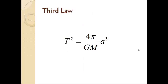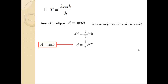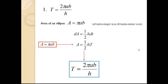The third law states that the square of the period of revolution is proportional to the cube of the length of the major axes of its orbit. We'll prove this law in three steps. First, we need to show that the period T is equal to 2πab over h. We know that the total area of an ellipse is equal to πab, where a and b are the semi-major and semi-minor axes, respectively. This is the equation we previously derived in the second law. We integrate the left side with respect to A and the right side with respect to t, then substitute πab for A and rearrange for T, which gives us 2πab over h.